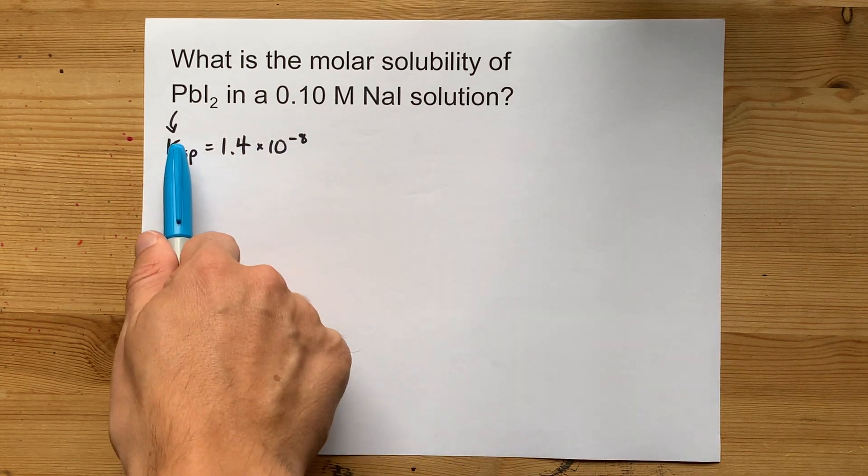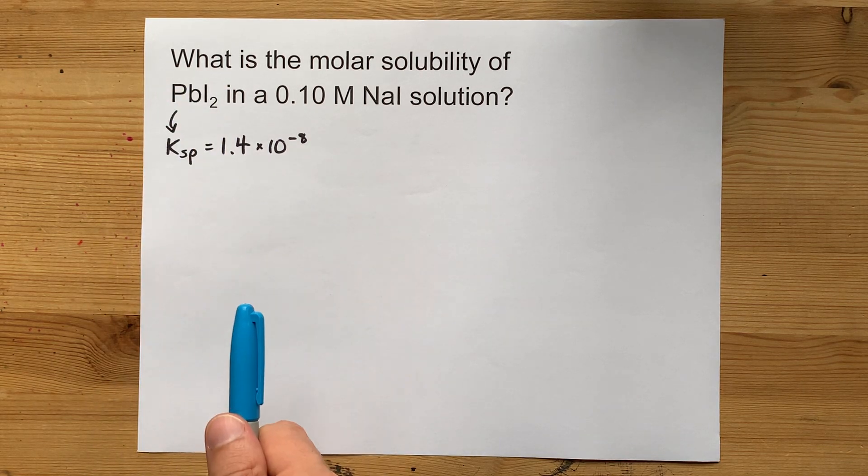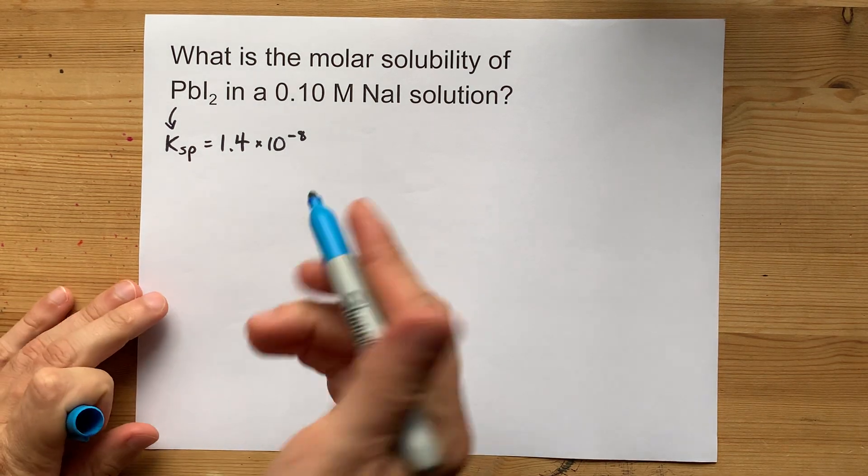To solve the question, you're going to need the Ksp, or the solubility product constant, for lead iodide. I looked it up, and it's 1.4 times 10 to the negative 8.